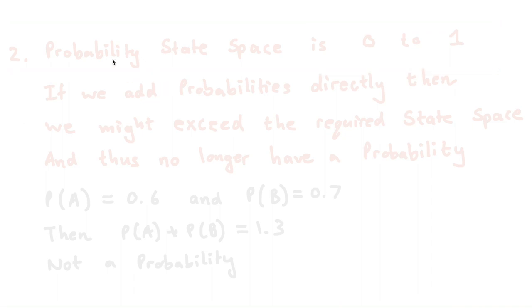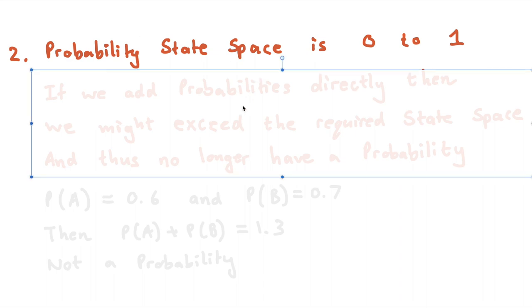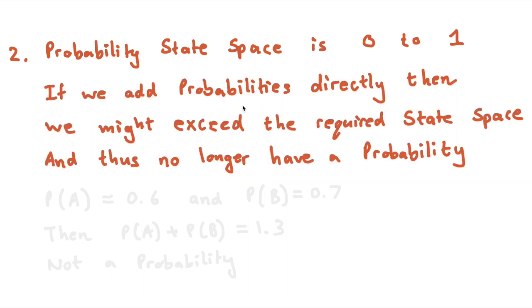So why do we need copulas with fancy functions and all of that? Well, if we come back to probability states, we know that probabilities live between 0 and 1. A probability cannot be negative and it cannot be greater than 1 because then it is nonsensical. The problem is, what happens when we want to add up a whole bunch of probabilities together? It's like, what is the probability that both A and B occur? We know that if we just had to add these probabilities directly, then there is a possibility that we might exceed the required state space of 0 to 1, and then we no longer have a probability.